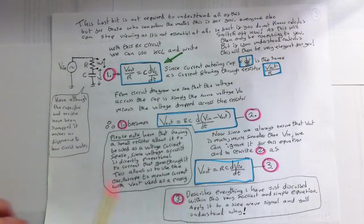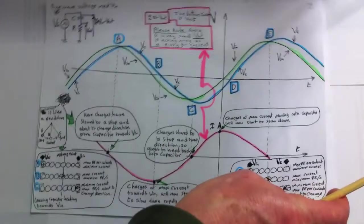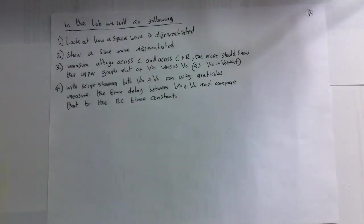So that's this tutorial. In the lab, I'm just going to look at a square wave differentiated in the oscilloscope. I'm going to look at sine wave differentiated. I'm going to measure the voltage across the capacitor, and across the capacitor plus the resistor. The scope should show the upper graph plot of Vin versus Vc, which we just looked at. And with the scope showing both Vin and Vc, now I'll use the graticules in the oscilloscope to measure the time delay between Vin and Vc. So I'm going to be able to measure that very small time delay here using the oscilloscope. I'm going to be able to measure roughly this time delay. It's not going to be exact, but it's going to be a rough measurement. So that's what we're going to do in the lab. So that's this tutorial complete.